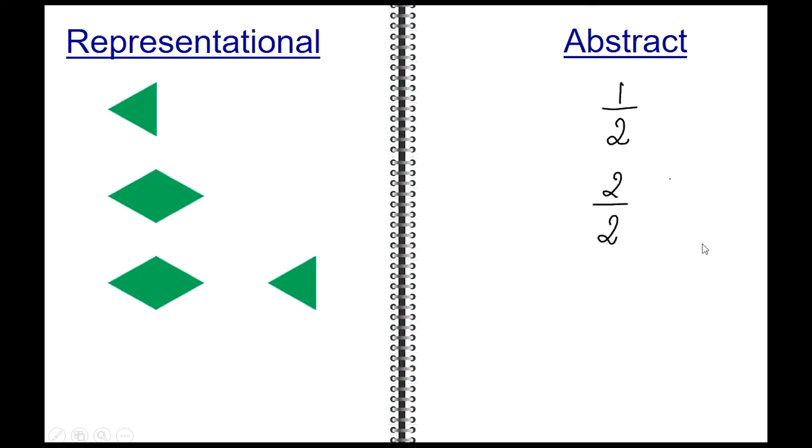When three triangles are provided, the abstract now is three over two, which is three halves.